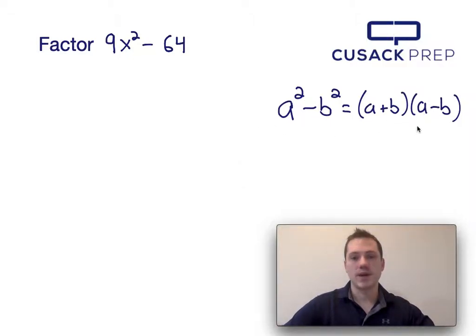Now, for the difference of squares equation, we have to recognize that a squared is in the same position as 9x squared, and b squared is in the same position as 64.